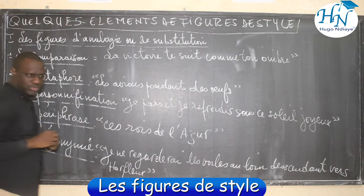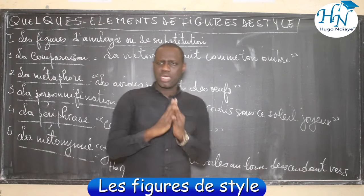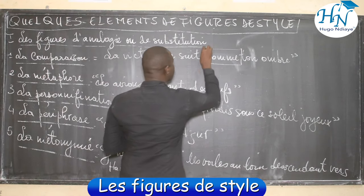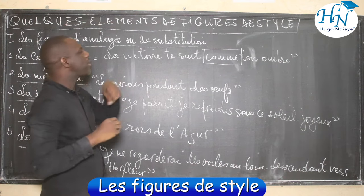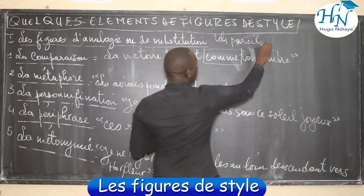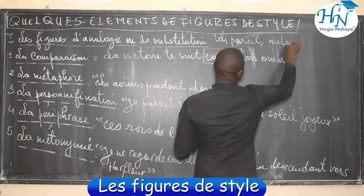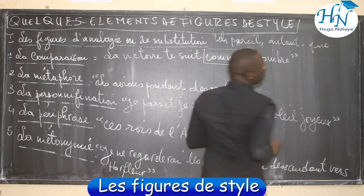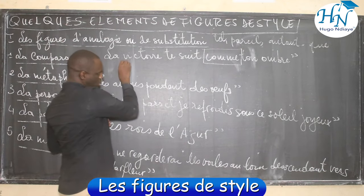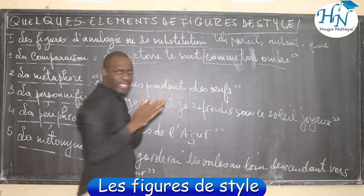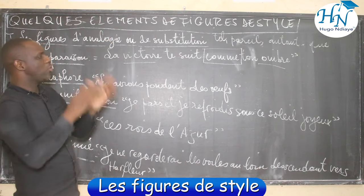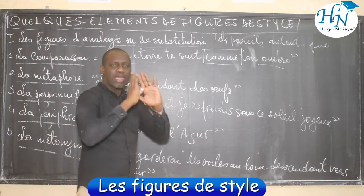Qu'est-ce que la comparaison ? La comparaison consiste à comparer deux éléments avec la présence d'un outil comparatif qui s'appelle « comme ». Mais attention, ça ne s'arrête pas à « comme » seulement. Parmi ces outils comparatifs, on peut avoir : tel, pareil, autant que, aussi que, semblable, etc.